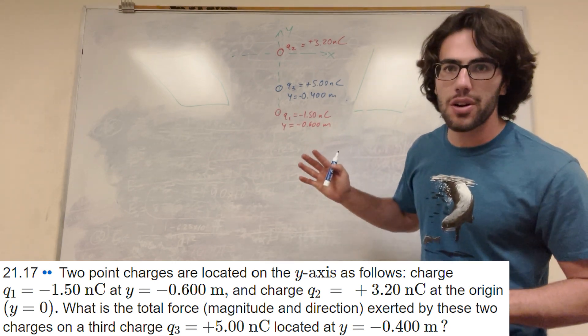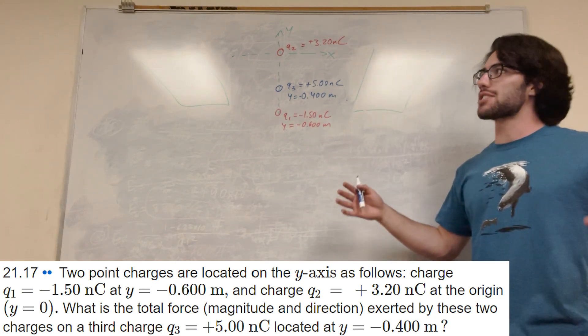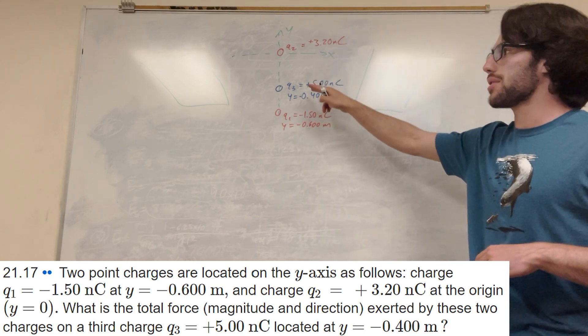What's up Cal gang? Alright, so we've got this pretty straightforward question here. We've got this axis, right? We have three charges on it: Q1, Q2, Q3.